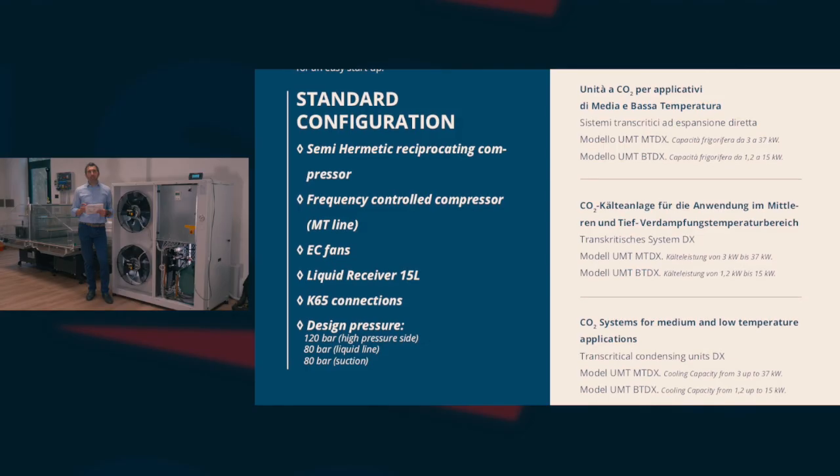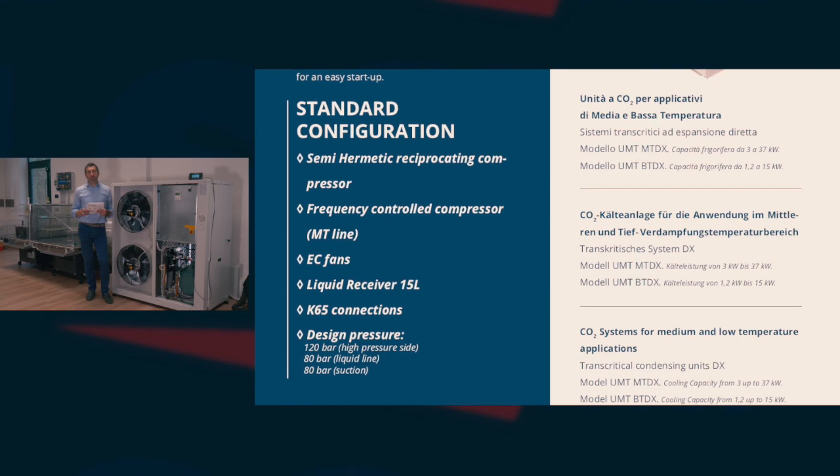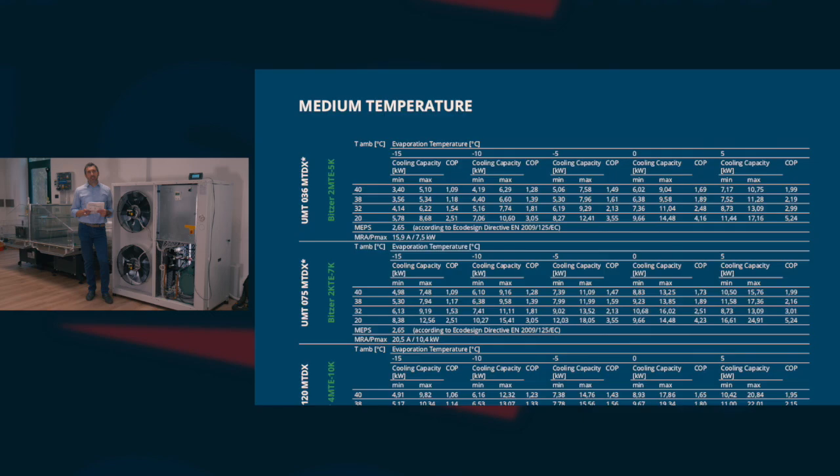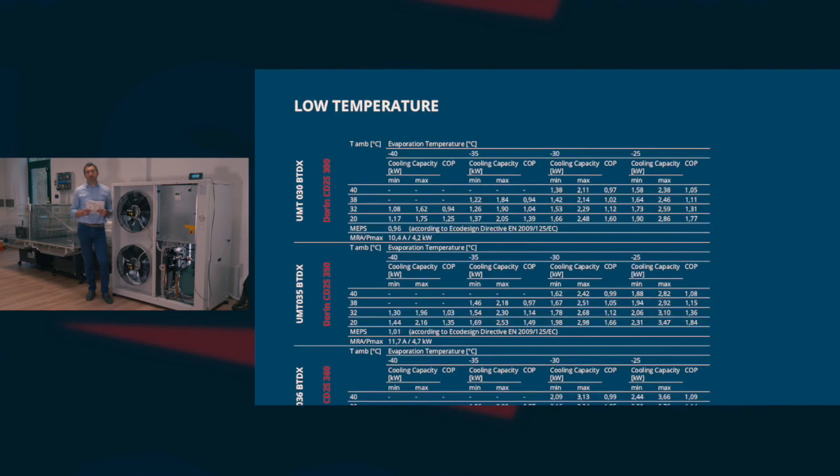We have two different types of unit: medium temperature and low temperature. In the medium temperature version, we use Bitsa or Dohring compressors, while in the low temperature version, we use Dohring two-stage compressors.